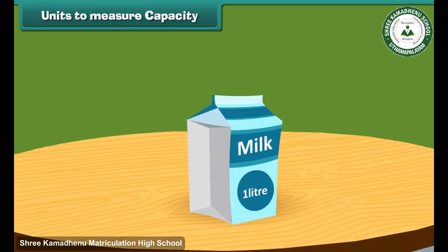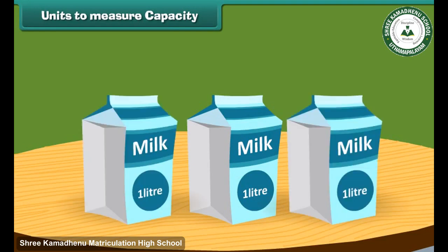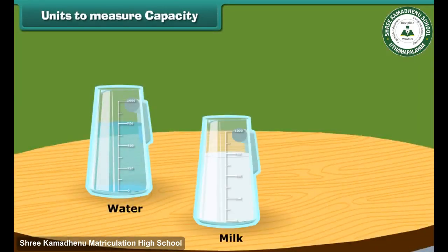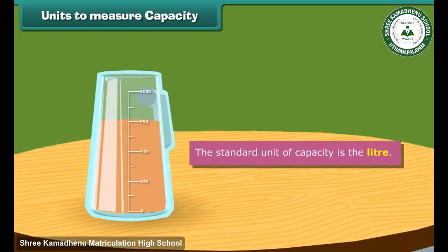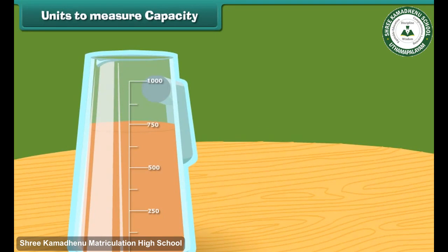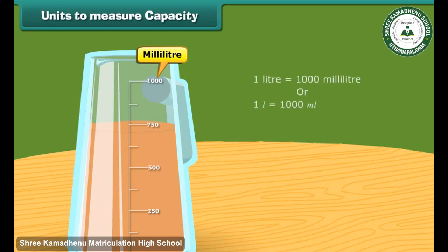How much milk comes to your home daily — 1 liter, 2 liters, or more? The capacity of liquids like water, milk, juice, etc. is measured in terms of liters or milliliters. The standard unit of capacity is the liter. The part obtained by dividing 1 liter into 1000 equal parts is called a milliliter. This means that 1 liter is equal to 1000 milliliters.